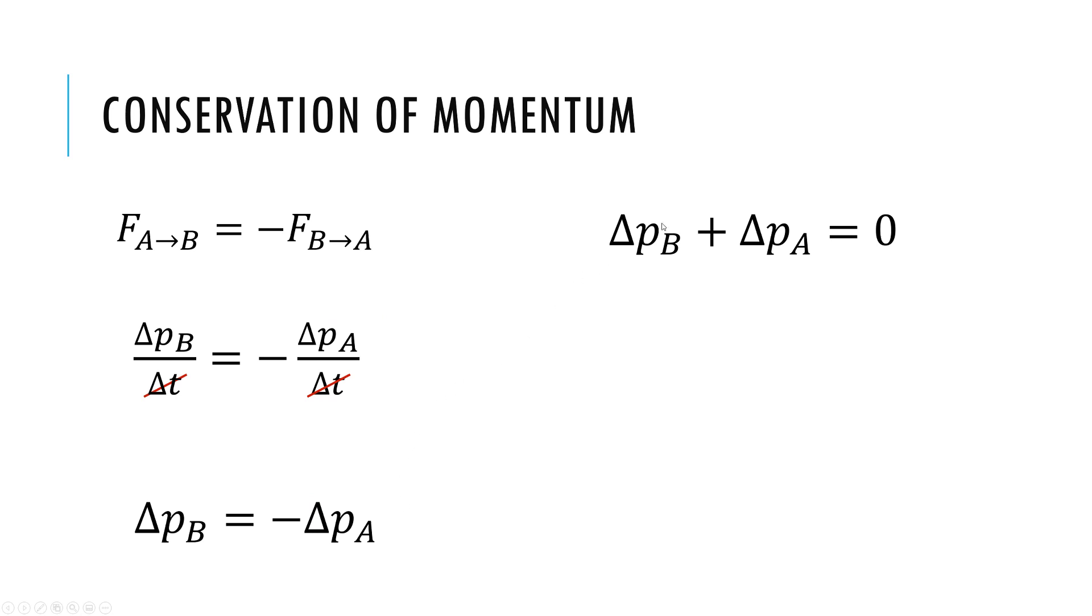This comes from Newton's third law and Newton's second law combined. And when we combine those two laws you see if I add the changes of each object together I get zero. In other words, the change in momentum of the system is zero. This is what we mean by conservation of momentum. There is no change in the momentum of the system.